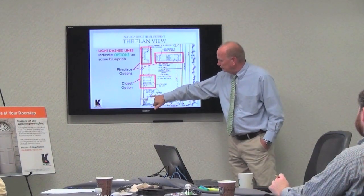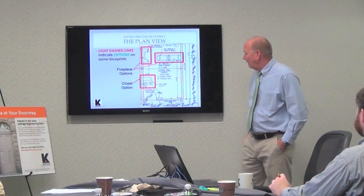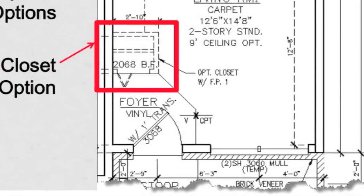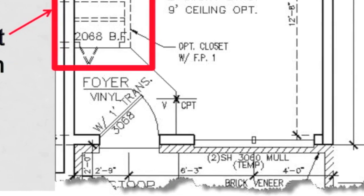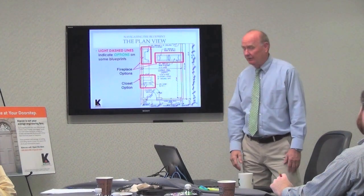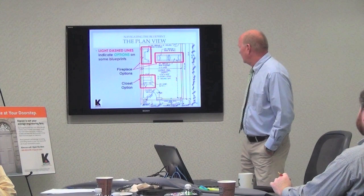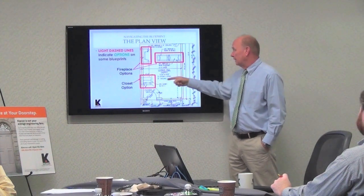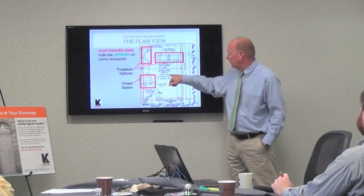It's also saying this door has a 1-foot transom above it. CPT V — what does that show us? It could be carpet and vinyl. The acronyms are sometimes tough to figure out and may or may not be listed anywhere, so you sometimes just have to think about it. But when you break this area down it's really pretty basic — it's giving us dimensions, options, the doors, the room name, and the dimensions of the room right underneath.